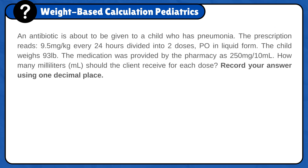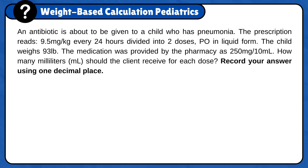An antibiotic is about to be given to a child who has pneumonia. The prescription reads 9.5 mg per kg every 24 hours divided into two doses, PO in liquid form. The child weighs 93 pounds. The medication was provided by the pharmacy as 250 mg per 10 milliliters. How many milliliters should the client receive for each dose? Record your answer using one decimal place.